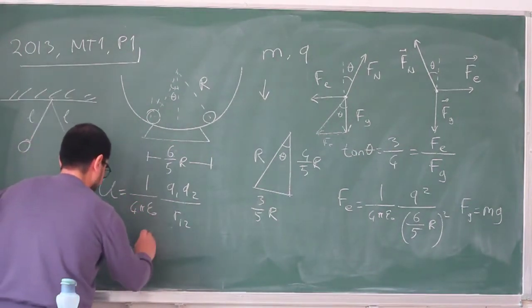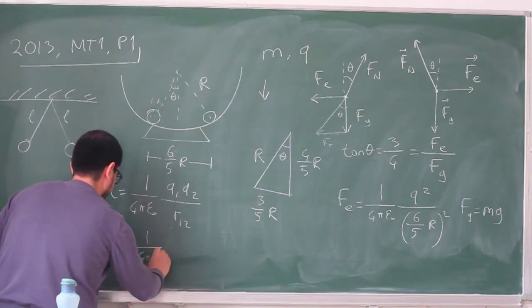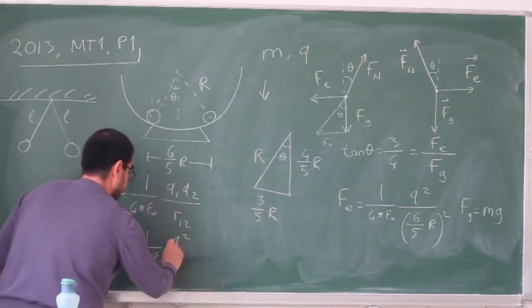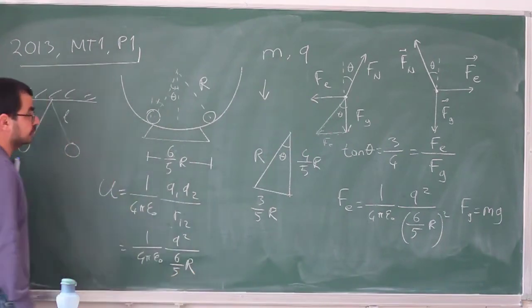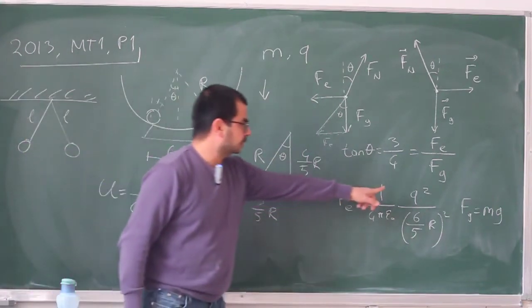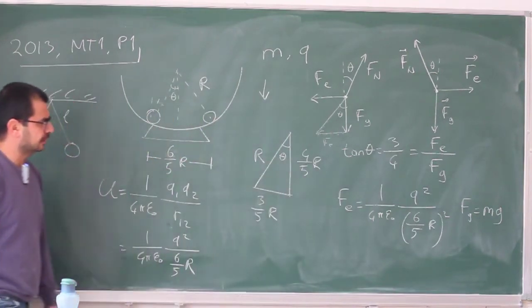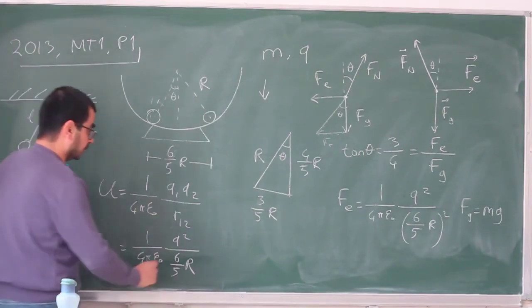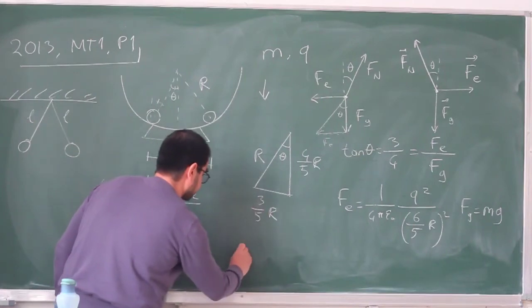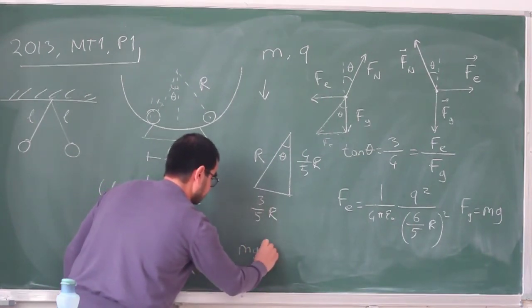We can just write this down. So this is 1 over 4 pi epsilon 0, no surprises there, q2 divided by 6 fifths r. And at this point, you should probably pull out the value derived there, q2 and substitute in here and express this in terms of m and g and so on and so forth. And you can almost guess what the answer is going to be. The answer is not going to be, but what it's going to look like. This is going to be something, something times m times g times r.